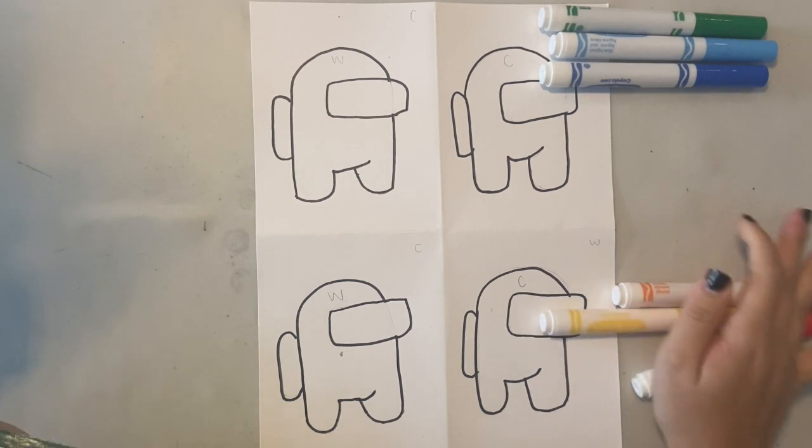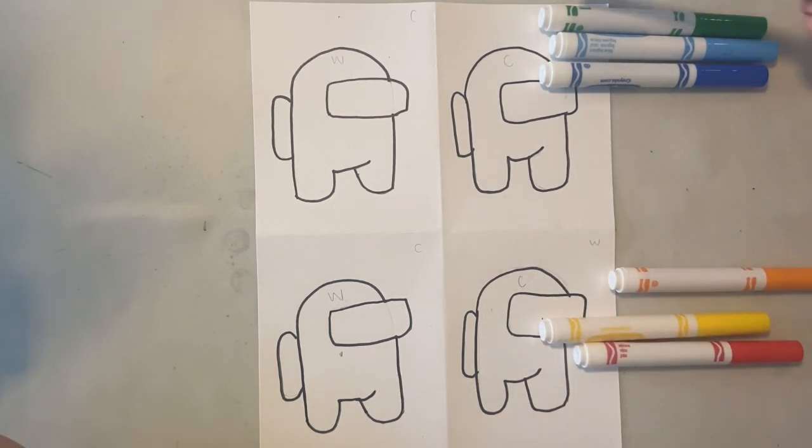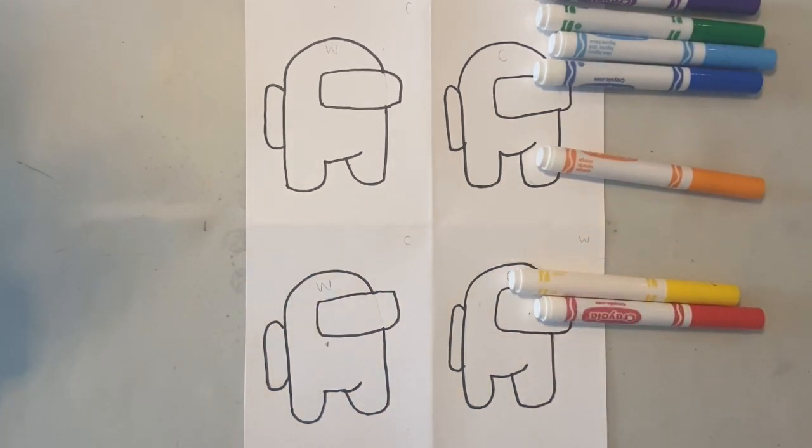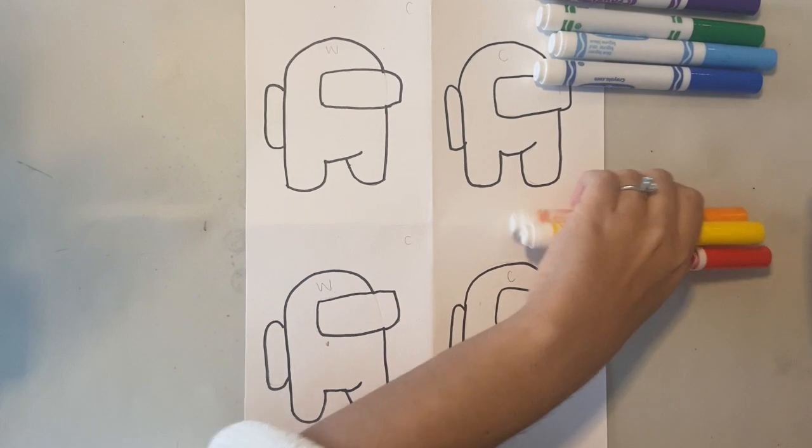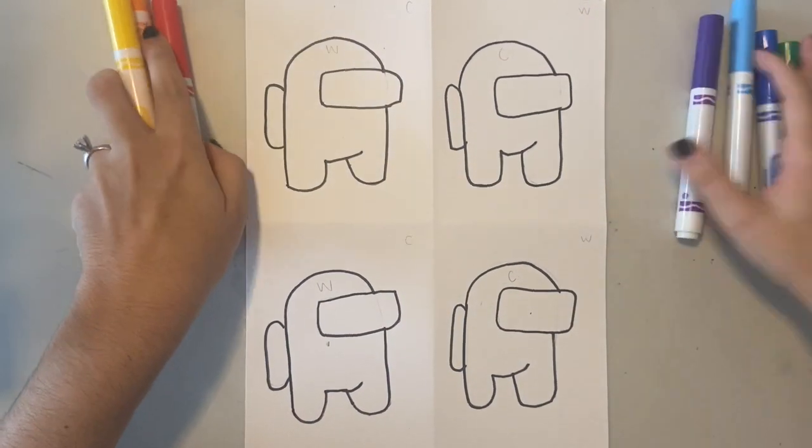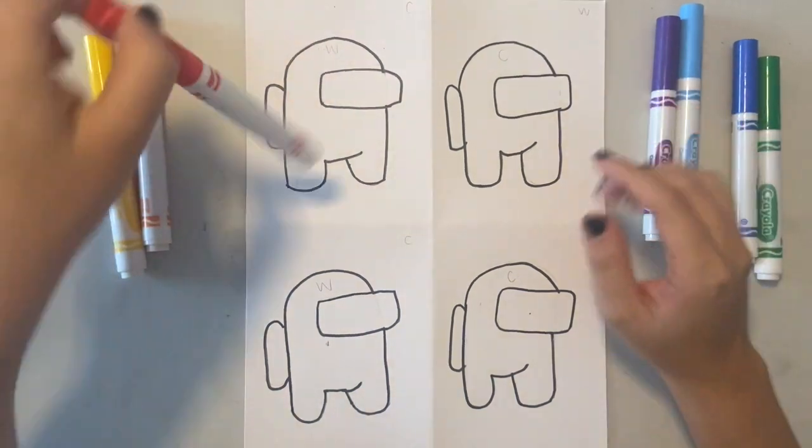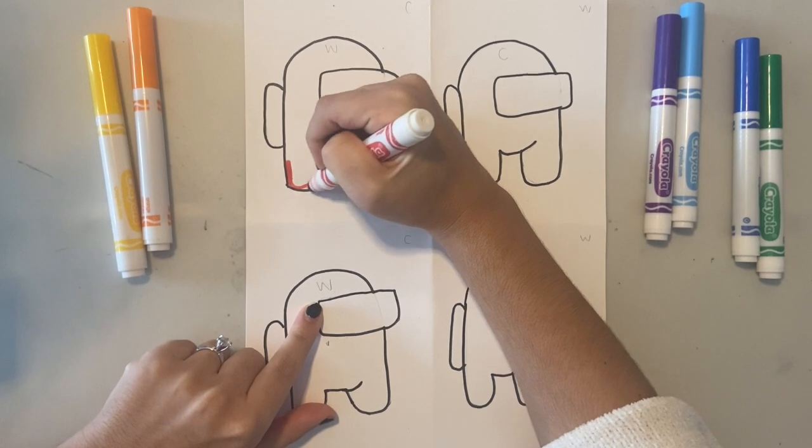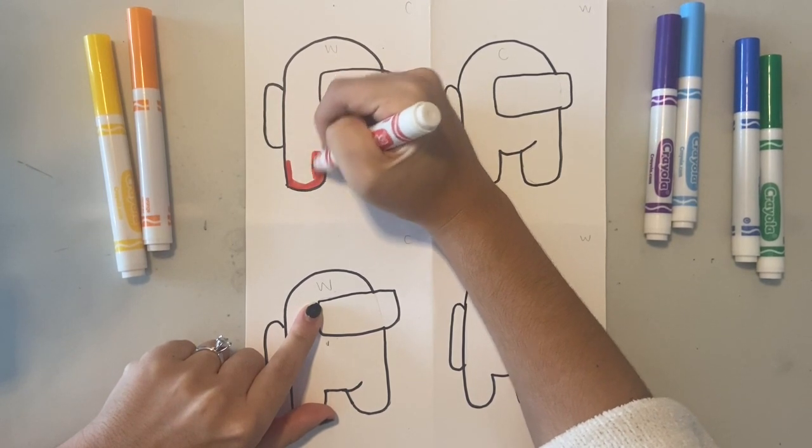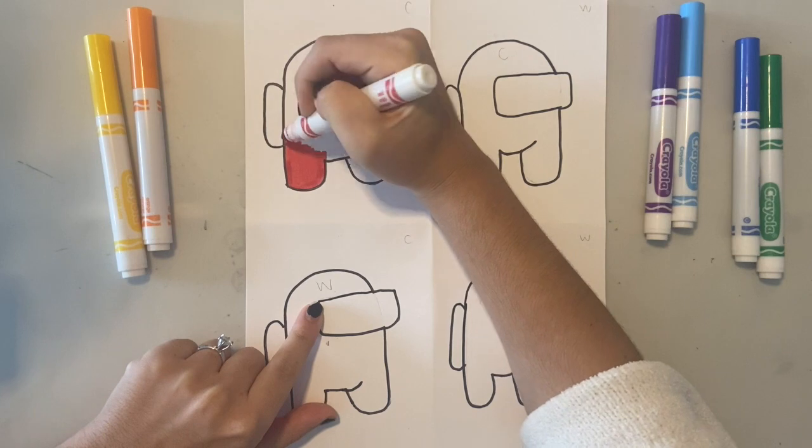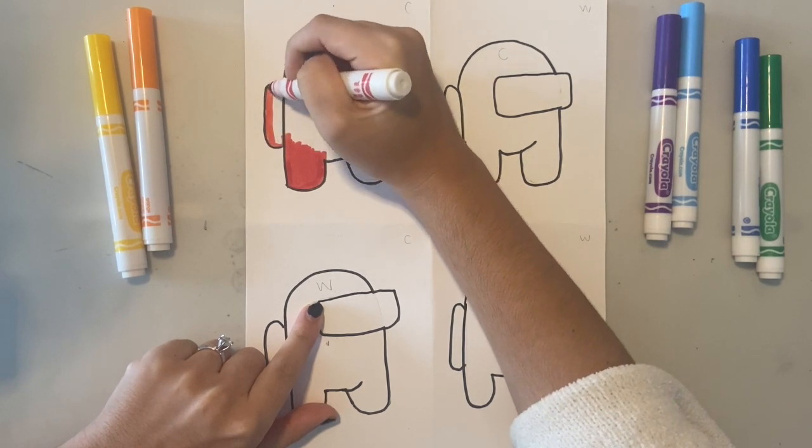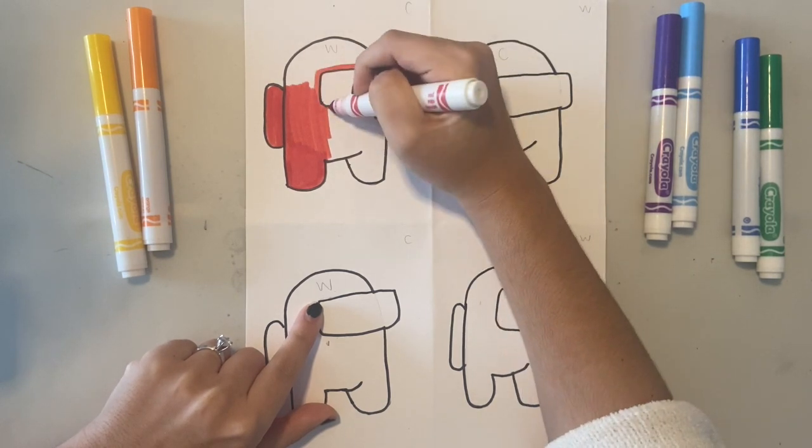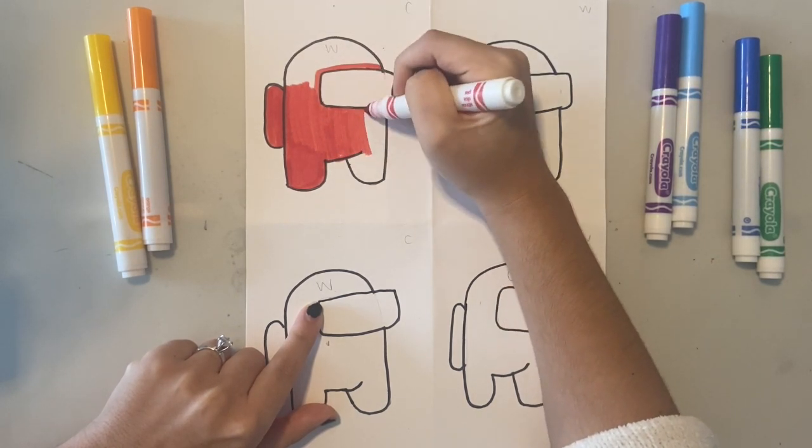I wrote W and C on my Among Us characters and backgrounds to help me remember that I'm going to color them warm or cool. I also separated my markers into warm and cool colors to make it easier for me to remember which ones are warm and which ones are cool. I'm going to start by coloring my first Among Us color with a warm color, so I am choosing red. I'm making sure to color in nice even strokes and making sure to stay inside the lines of my drawing.